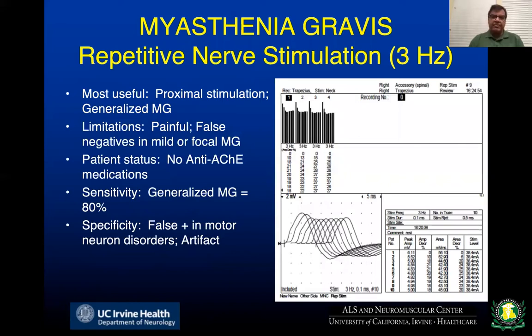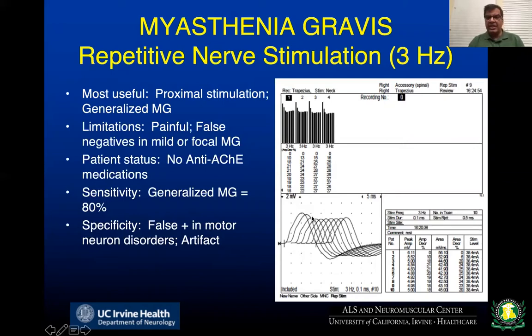In terms of diagnostic testing, repetitive nerve stimulation, done as part of nerve conduction studies, is very useful. It should be done only on weak muscles at three hertz stimulation. You can see that the maximal response of the first stimulus decreases with repeated stimulation — by the fourth stimulus it is lowest, then tends to recover, giving a U-shaped decrement curve. It is seen in about 80% of patients with myasthenia gravis, though it is not specific, as it can also be abnormal in neuropathy, motor neuron disease, and some forms of myopathy.